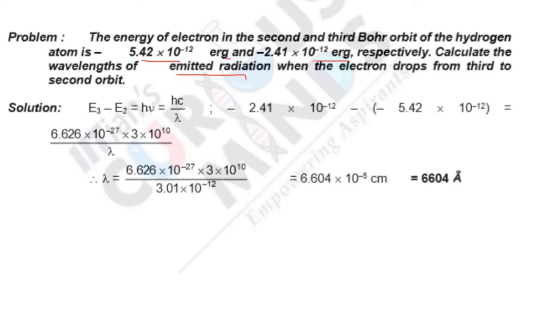Let us move on to solution. You can see E3 - E2 is nothing but hν, where ν is hc by λ. So the difference in energy is ΔE, which is h times ν, the frequency of that emitted radiation. To find the wavelength, we can write it as hc by λ.